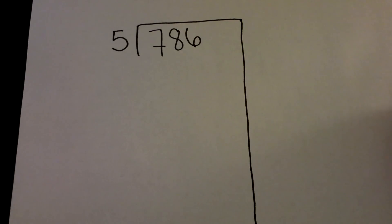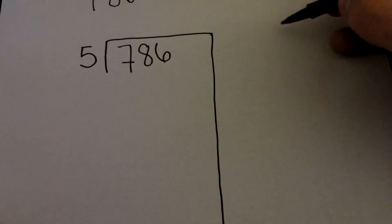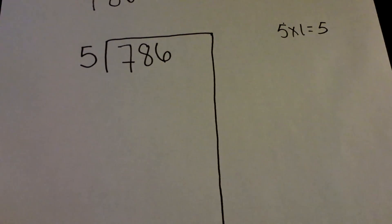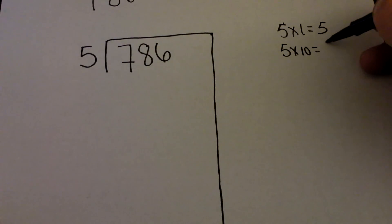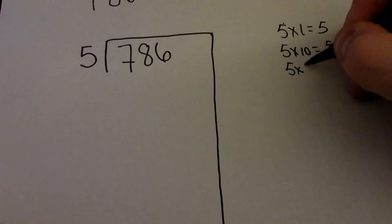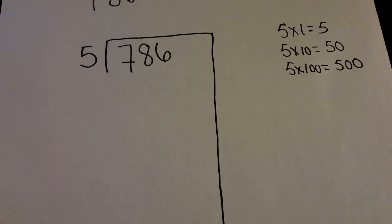First thing we're going to do is think about what problems we know. Let's think about multiplication. We know that 5 times 1 equals 5. That's easy enough for us. Because of our 10s rule, we know that 5 times 10 equals 50. We know that 5 times 100 equals 500. These are all pretty basic skills that we have mastered in the fourth grade.